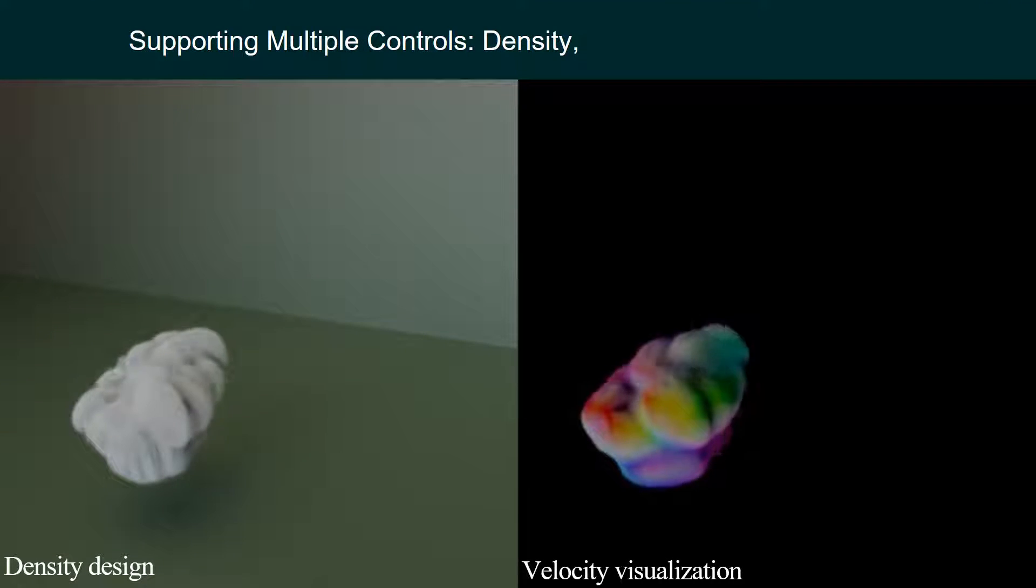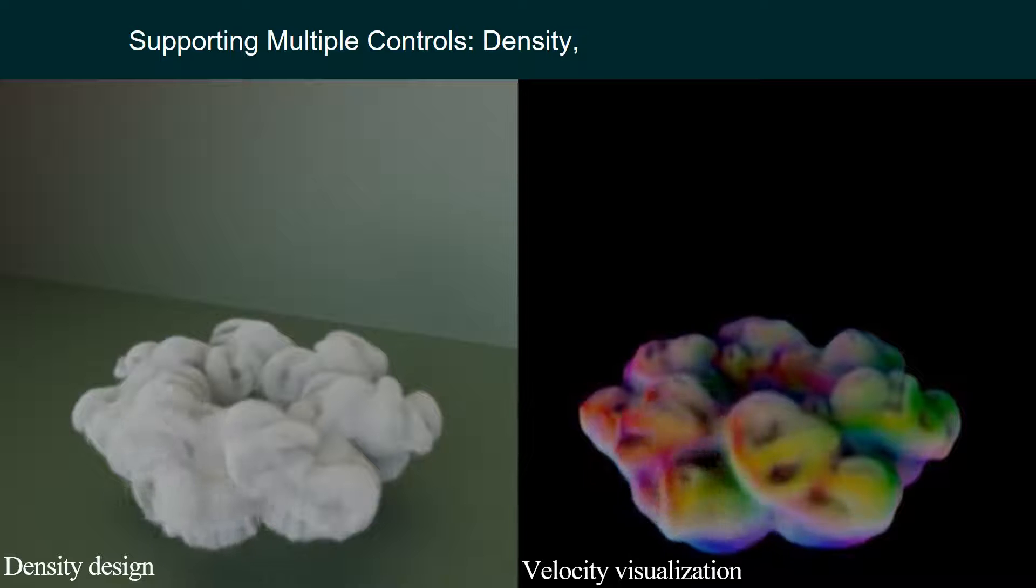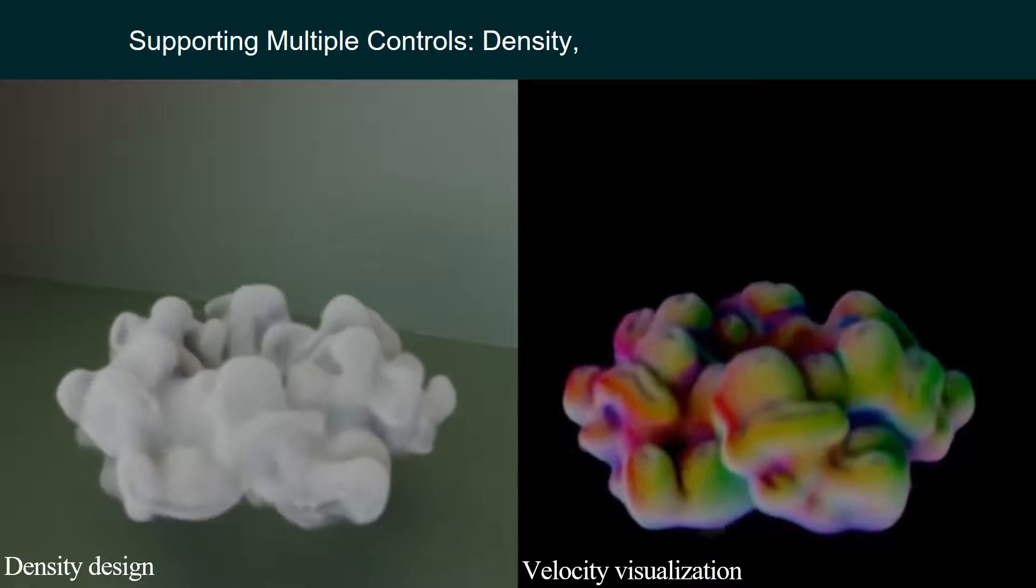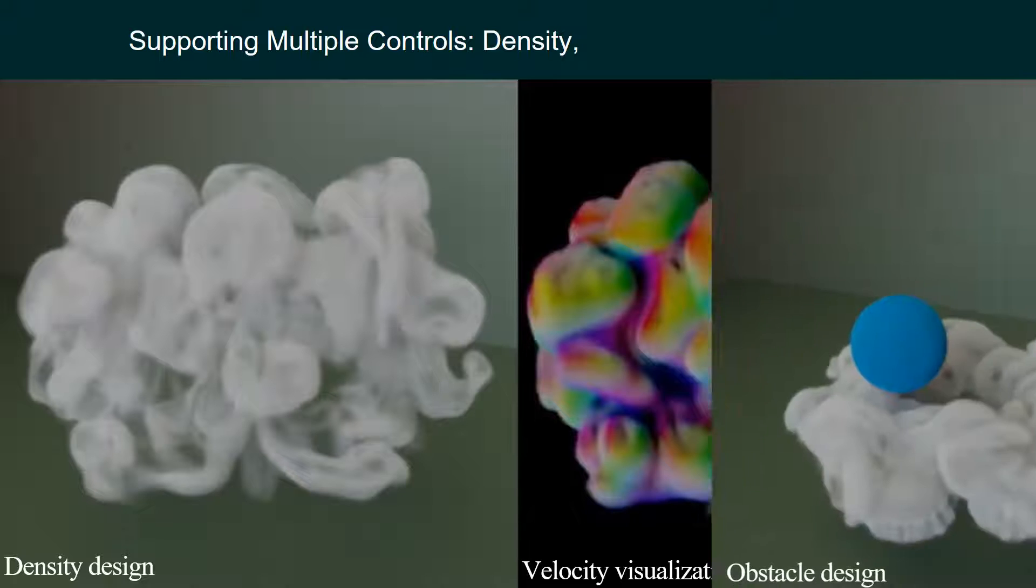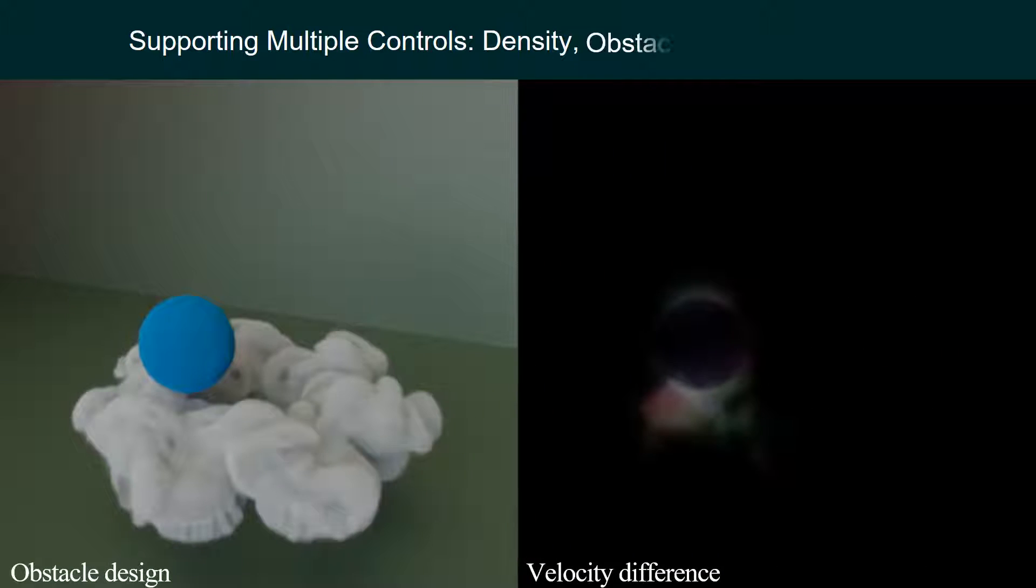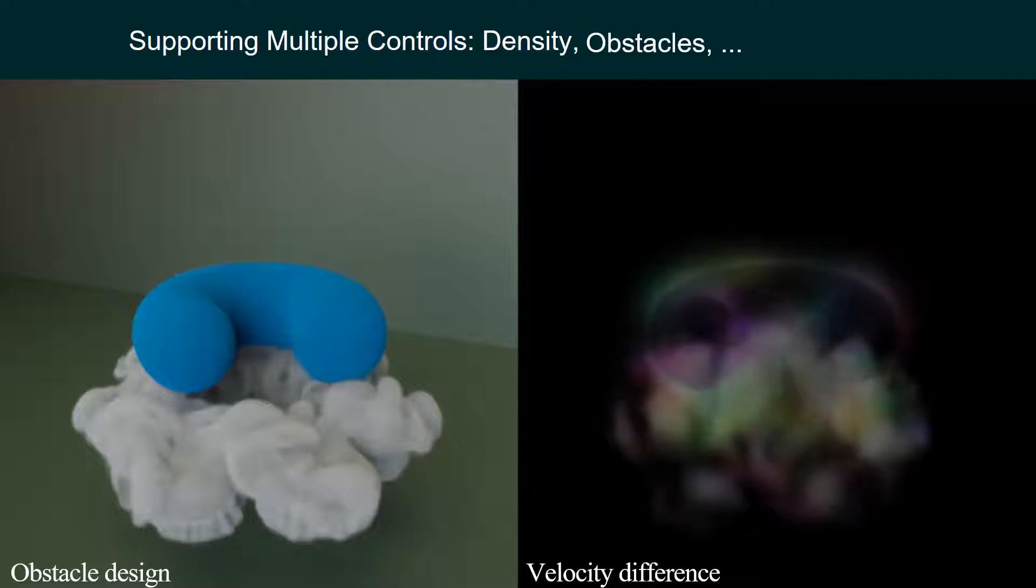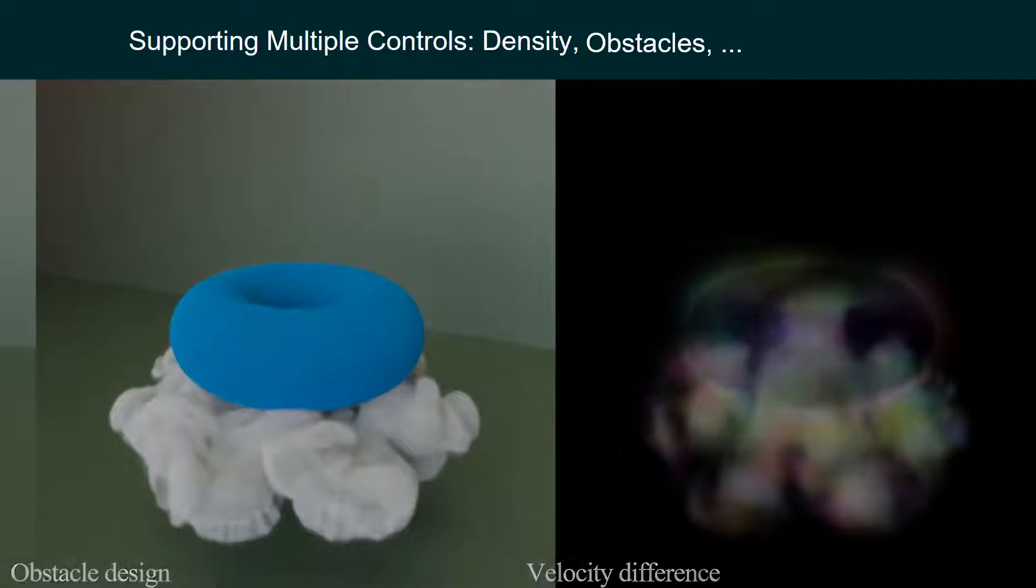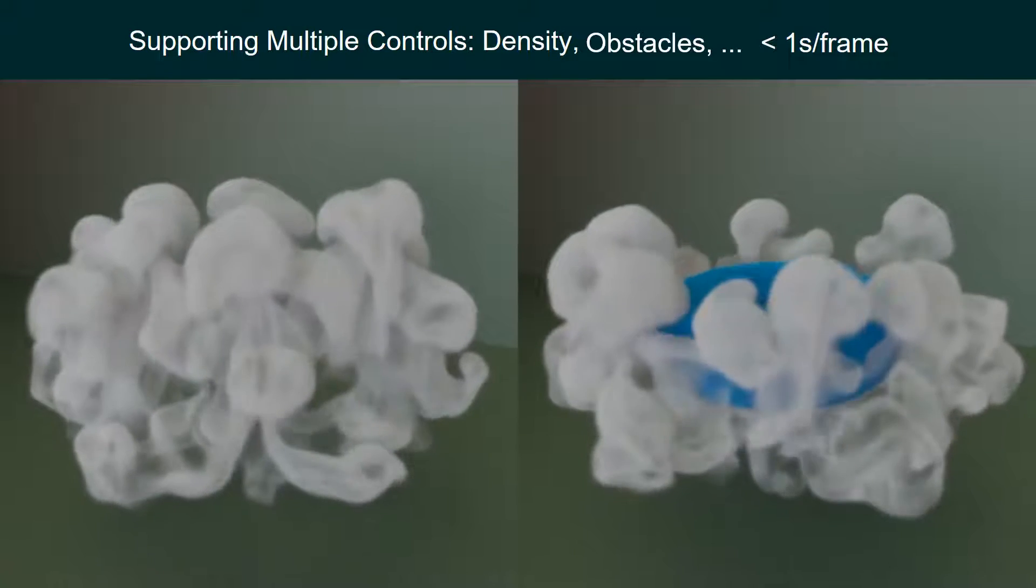Our method allows users to design simulations via density modifications. They can also change simulations with obstacles and other physical quantities. The generation takes less than one second per frame.